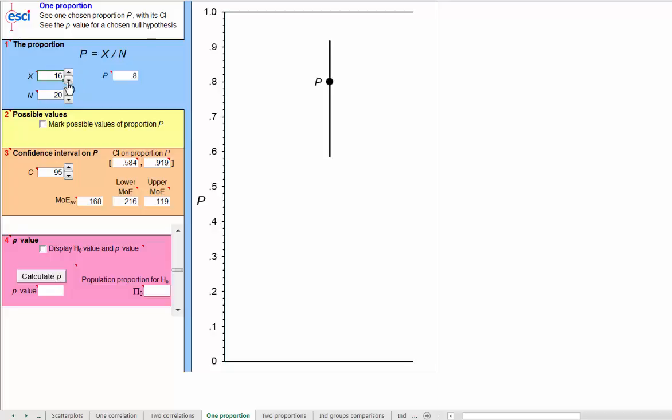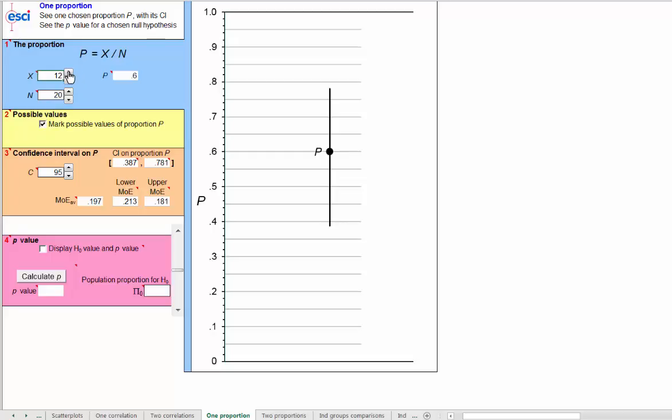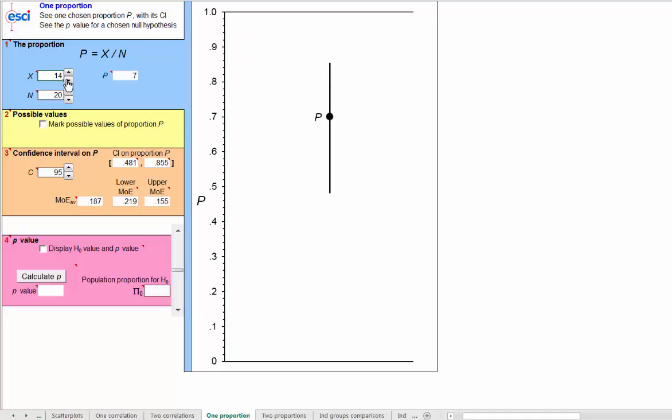If I adjust x, you can see how the proportion p goes in discrete steps, of course. And I can label the possibilities with this line. So p, in this case, can only take those values. So there we are, 16 out of 20.